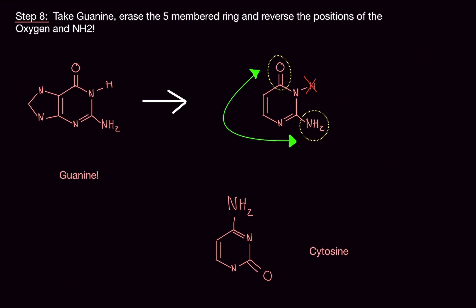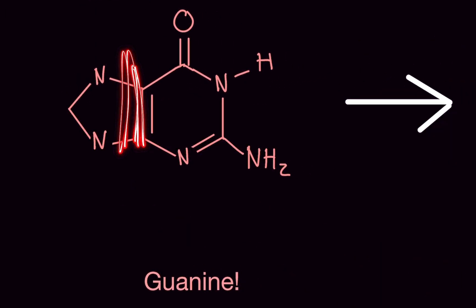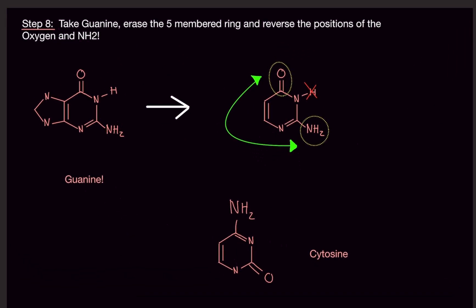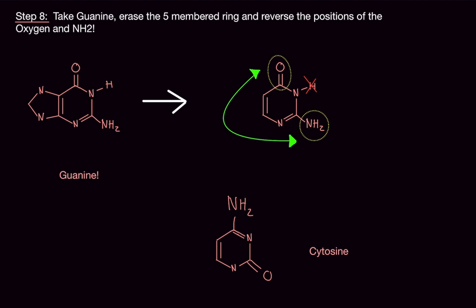For cytosine, take the guanine we just made and erase the five-membered ring completely. Then reverse the positions of the oxygen and the NH2 — just flip-flop them — and remove the hydrogen. That is cytosine. It's essentially: erase the five-membered ring and swap the groups. Think about it — guanine and cytosine bond together as pairs, so to get cytosine from guanine, you just erase part of it and swap the groups.